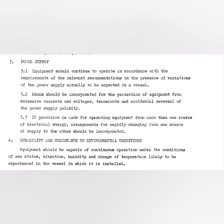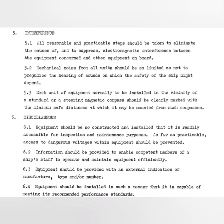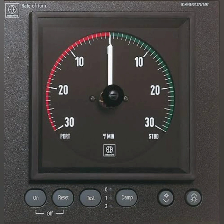The fourth point is about durability and resistance to environmental conditions, which includes vibration, humidity, and changes of temperature likely to be experienced. The last two points are interference and miscellaneous. Interference covers electromagnetic interference or sound-related interference, and miscellaneous covers the requirement that the equipment should be easily operated on a ship by a normal person.